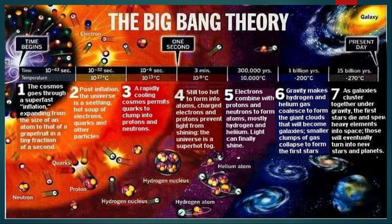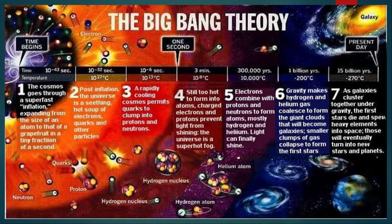Quarks are what make up the particles of matter. At 10 raised to negative 6 seconds, a rapidly cooling cosmos permitted quarks to clump into protons and neutrons as the universe cooled slightly. All three of these stages happened within the first second of the universe's existence.